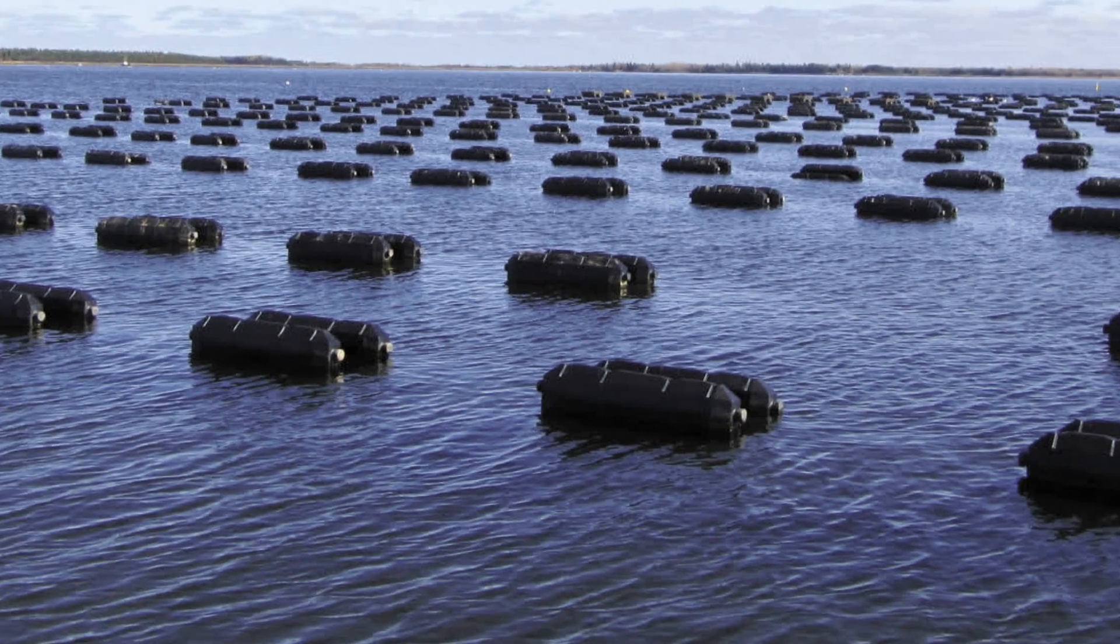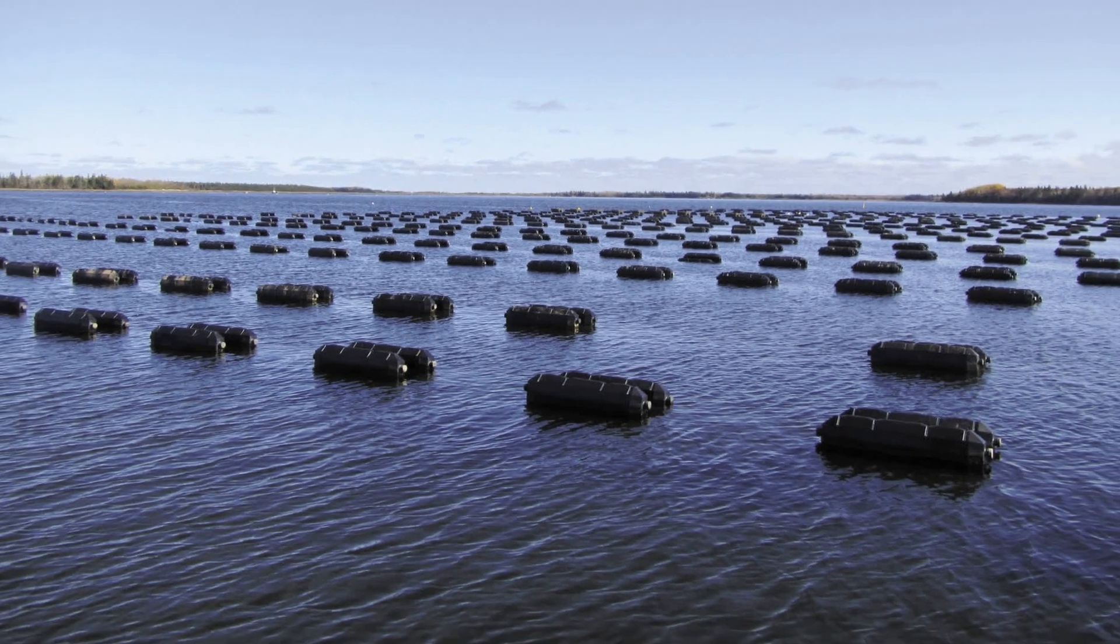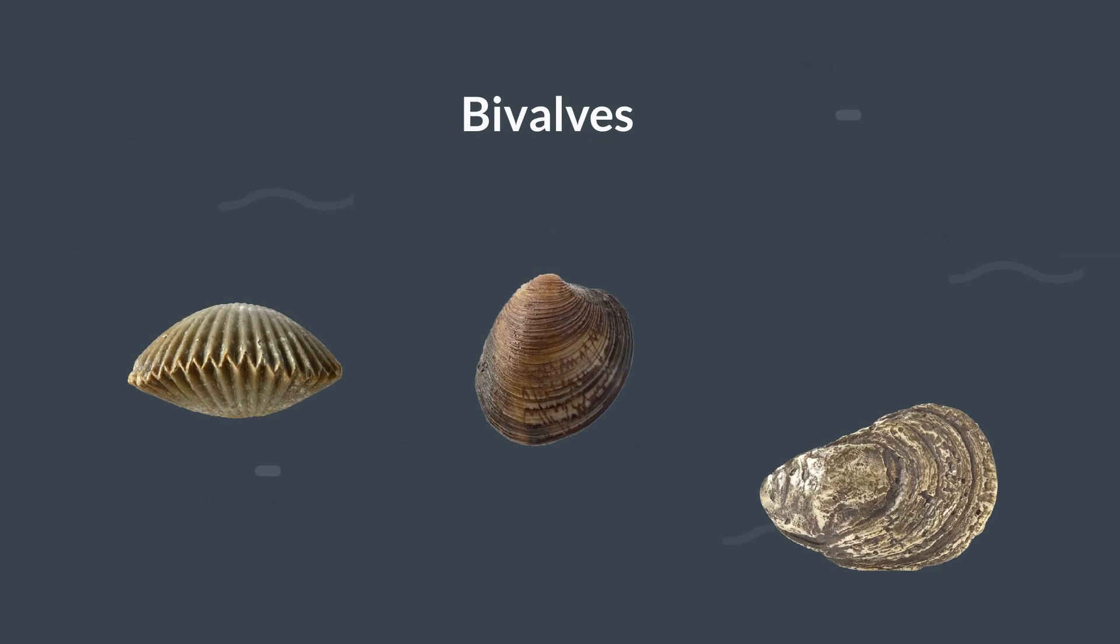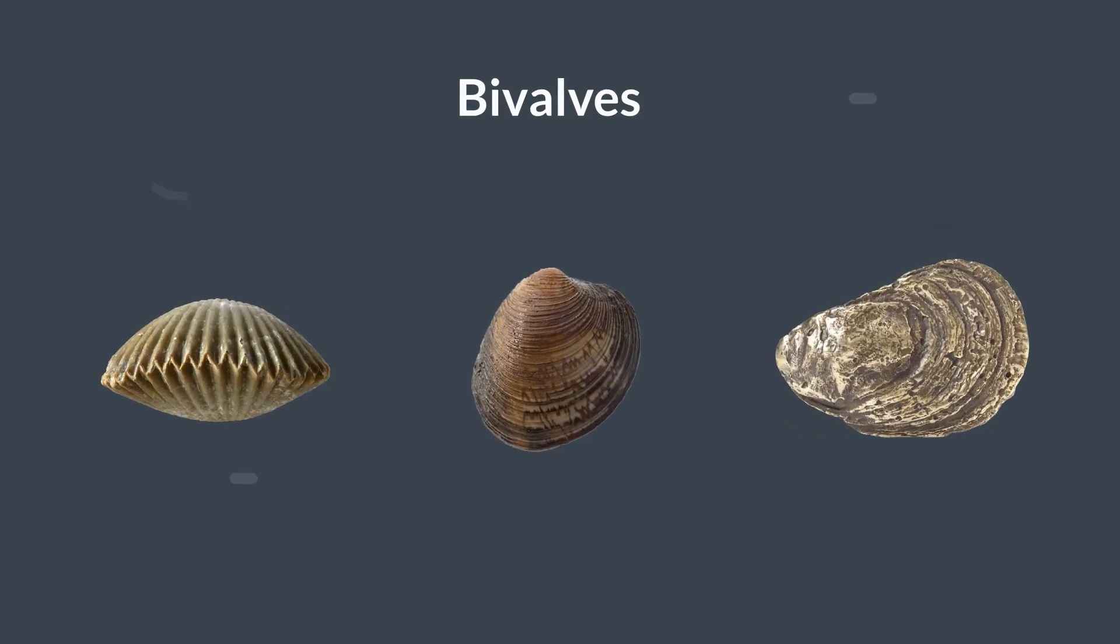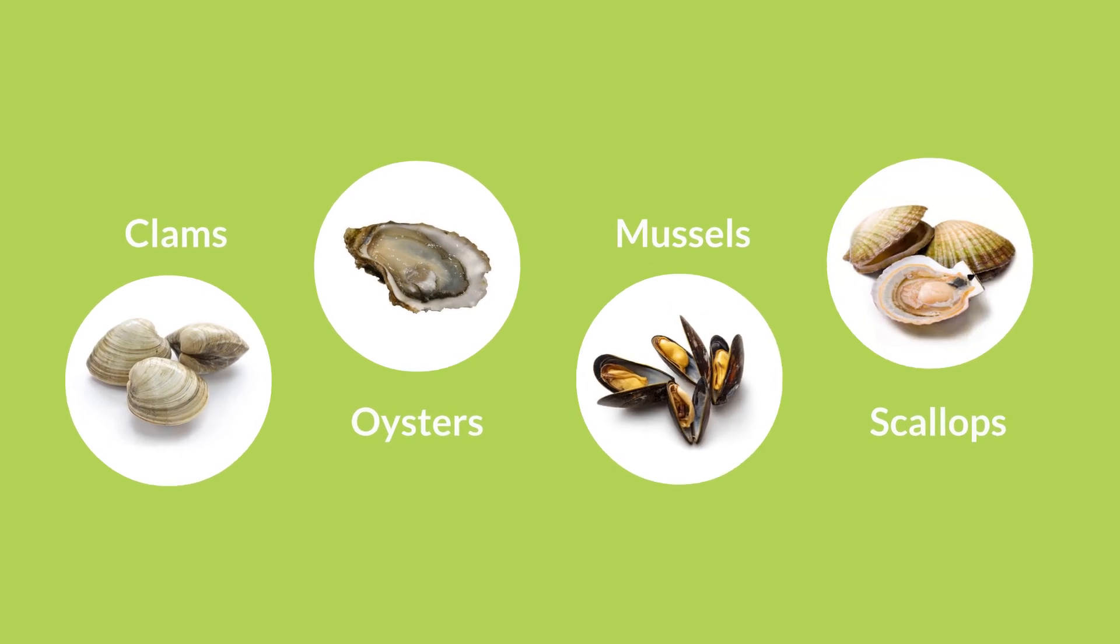Did you know that bivalve farming is considered to be one of the most sustainable forms of animal protein production? Bivalves are a type of shellfish that have two hard shells hinged together over a soft body. Clams, oysters, mussels, and scallops are all examples of bivalves.